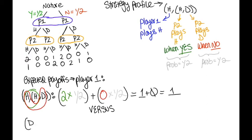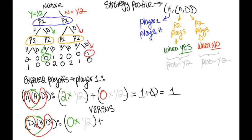If player 1 deviates from the strategy profile and chooses D instead of H, we see that in the state that player 2 says yes to movies, their new payoff is 0, which will again be multiplied by 1 half. We then add this value to the payoff DD when player 2 says no to movies, which is 1, which then is also multiplied by 1 half.